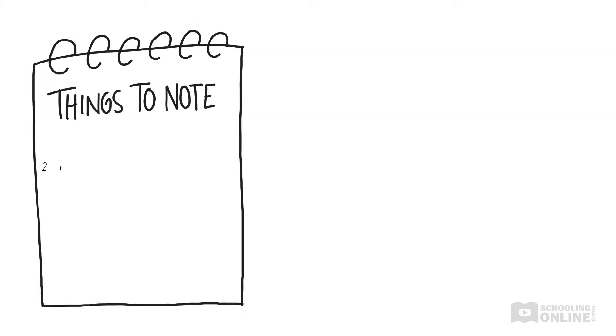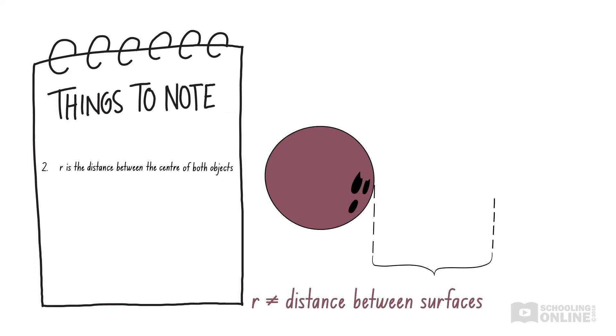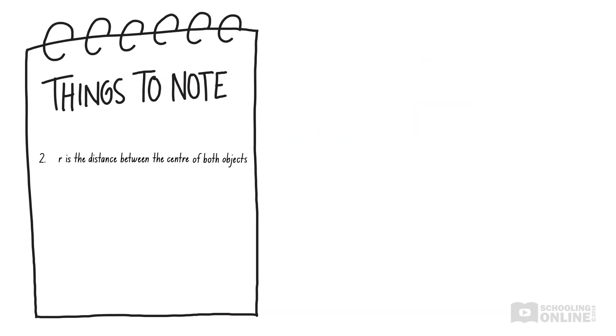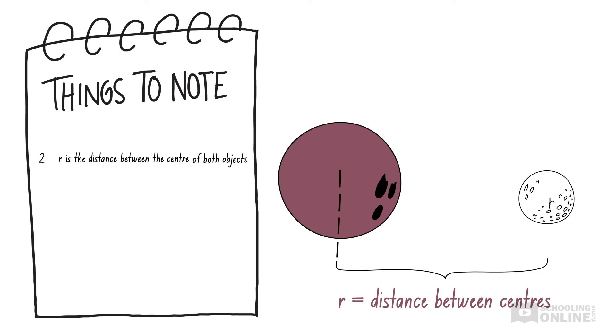Care should be taken when determining what distance r to substitute into the formula. For example, taking r to be the distance between the surface of the bowling ball and the surface of the golf ball would be incorrect. In this scenario, r should be the distance from the centre of the bowling ball to the centre of the golf ball.